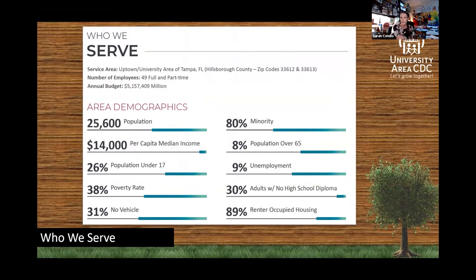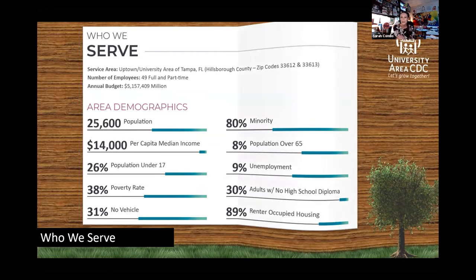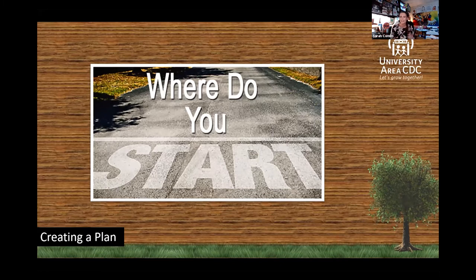So who are we serving in this community? Our population is about 25,000. The per median income is about $14,000. We have a 38% poverty rate, 31% have no vehicles, so it's a highly walkable and bikeable community. 80% are minorities, we have a 9% unemployment rate, and 89% of our residents are renting — about a 10% homeownership rate. With statistics like that, where do you start? Our organization is taking a strength-based approach to community development and planning, looking at the strengths of the community and building around those to create meaningful, equitable change.